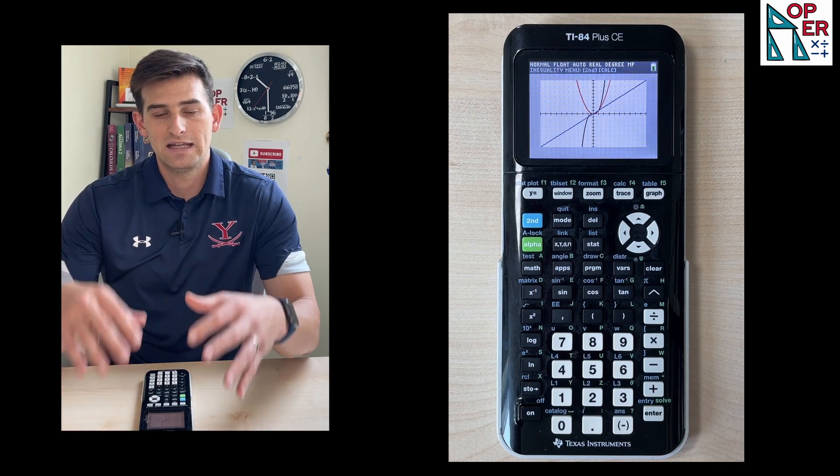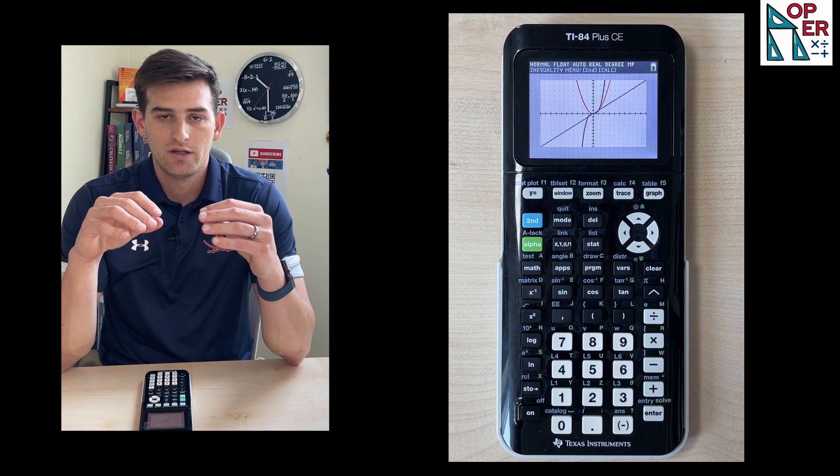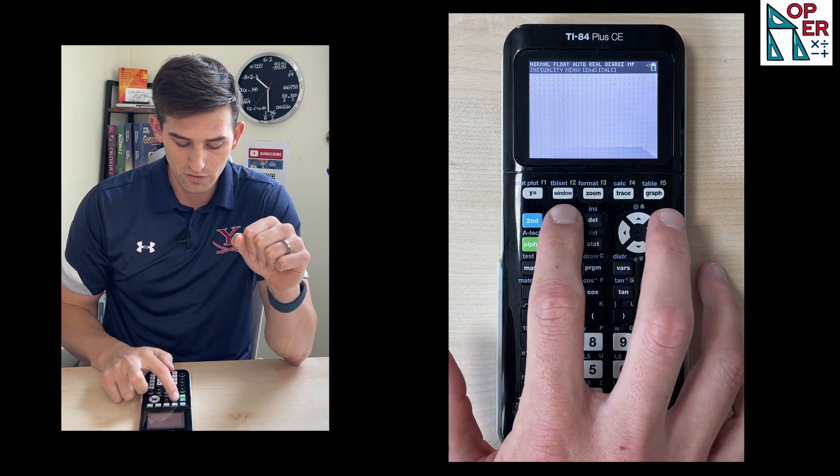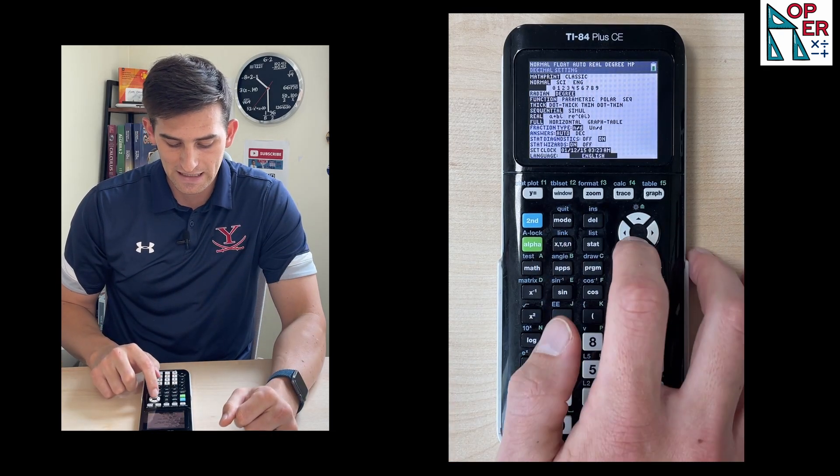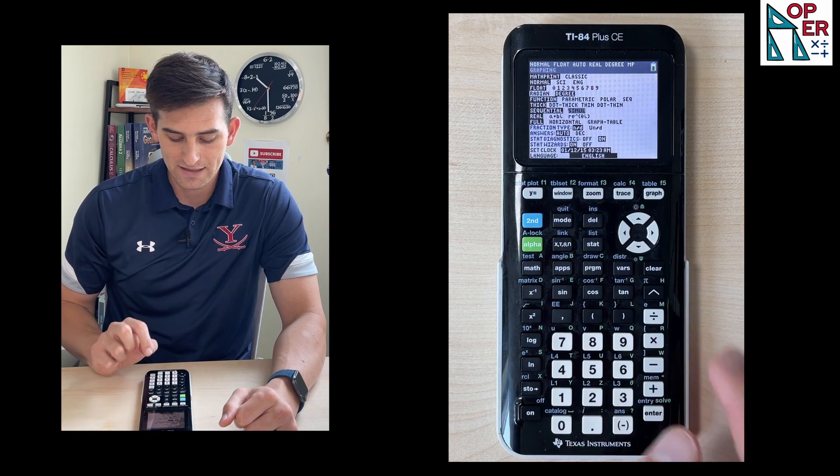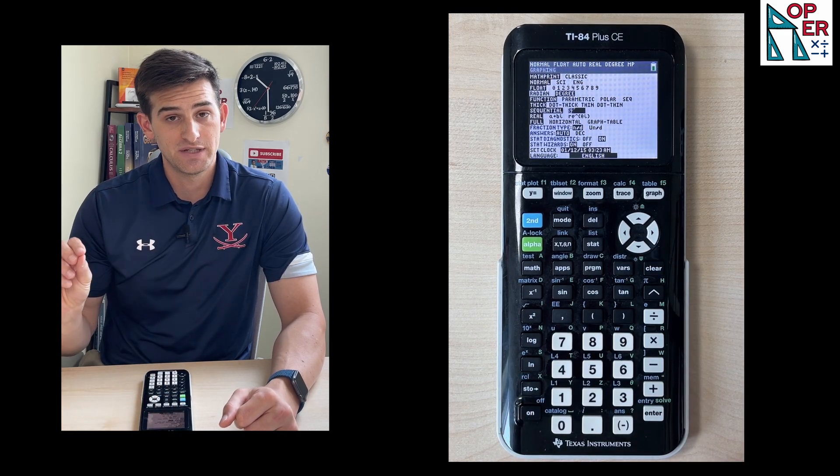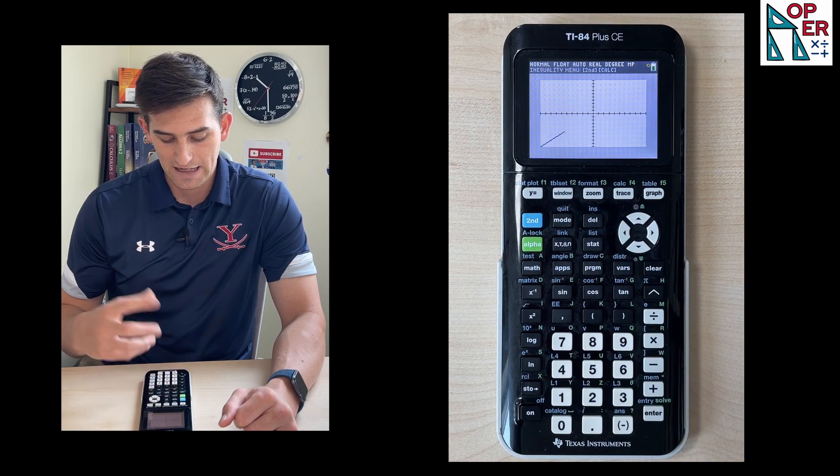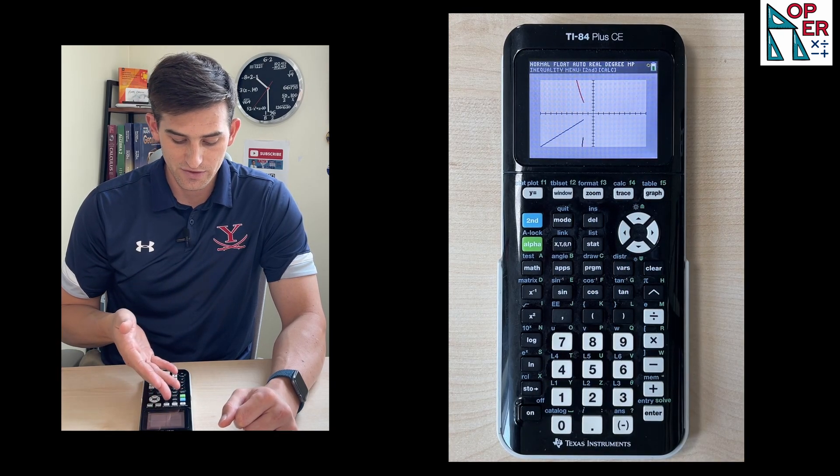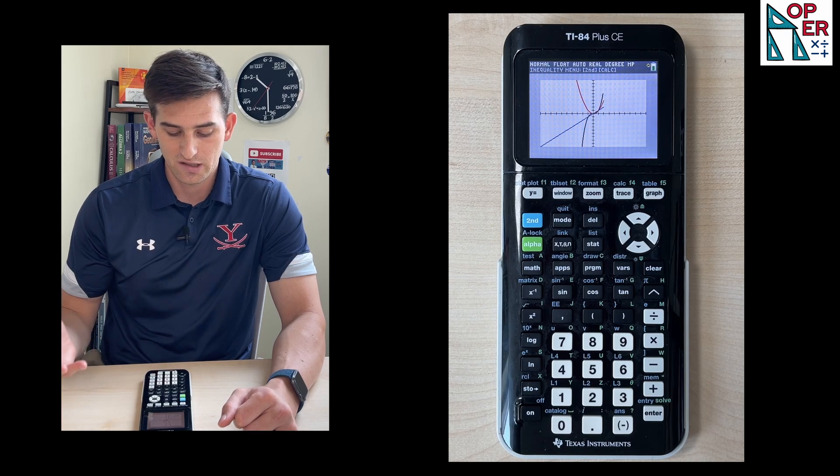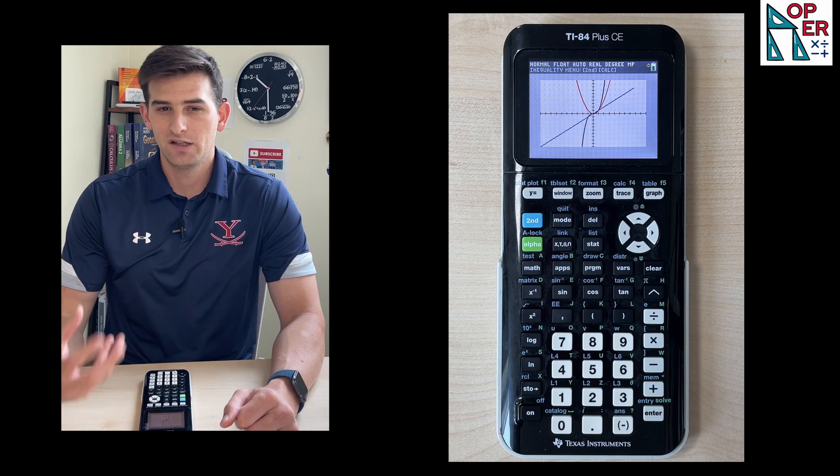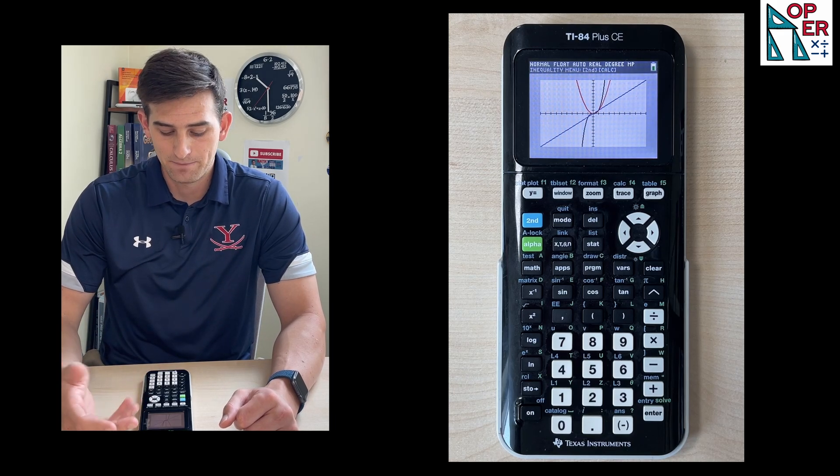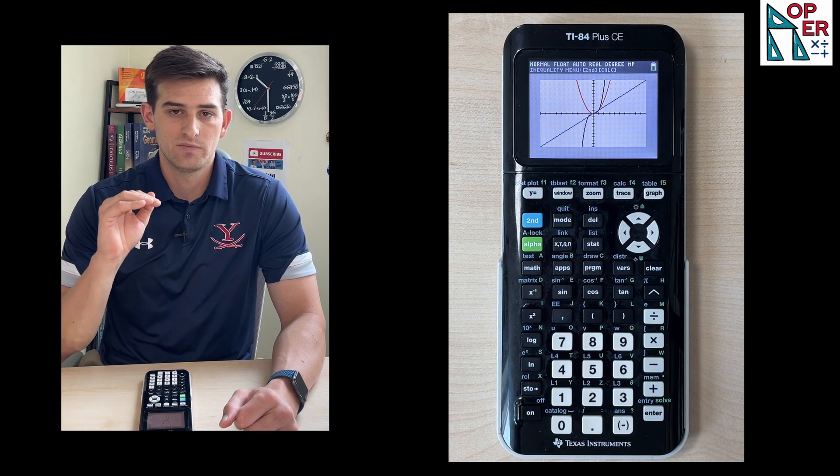The first thing we can do—right now it's graphing our functions sequentially, one after the other. So if we hit the mode button and go down to where it says sequential, if we go right, S-I-M-U-L, that's simultaneous. We hit enter there and now hit graph, and notice they're all going to start at the same time. Here's my first one, now my quadratic and my cubic, and there we go. So now we've got it a little bit better. They're still graphing pretty slow, but at least they're all starting at the same time. So that's number one: mode simultaneous.